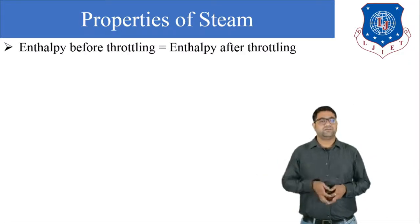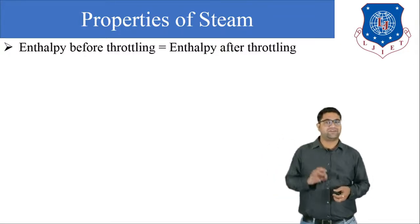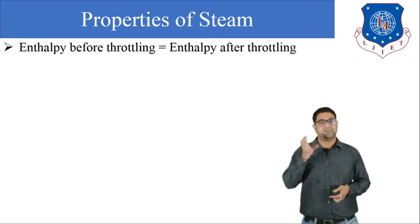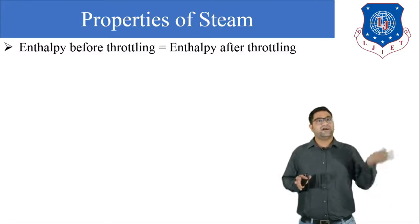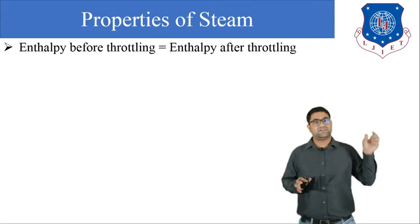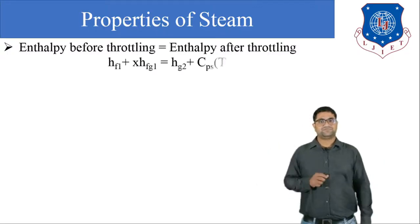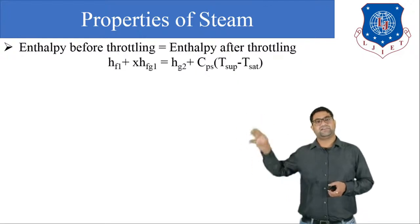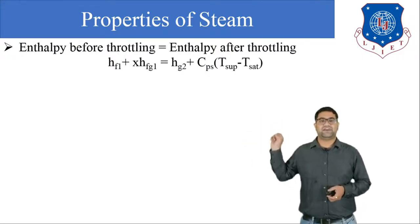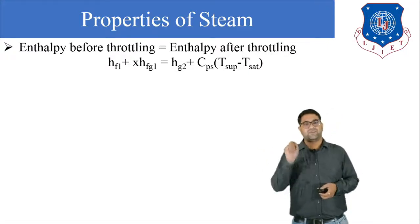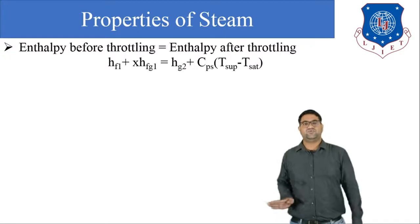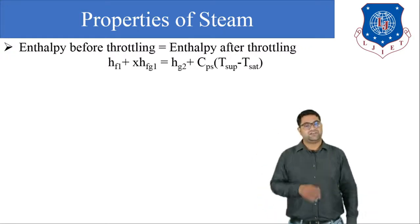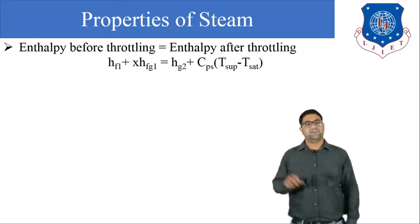To calculate the dryness fraction, we use the fact that enthalpy before throttling equals enthalpy after throttling. Enthalpy of wet steam — our initial condition — is HF1 + x·HFG1. After throttling it converts to superheated steam, whose enthalpy is HG2 + Cps·(T_superheated − T_saturated). Setting these equal allows us to solve for the value of x.